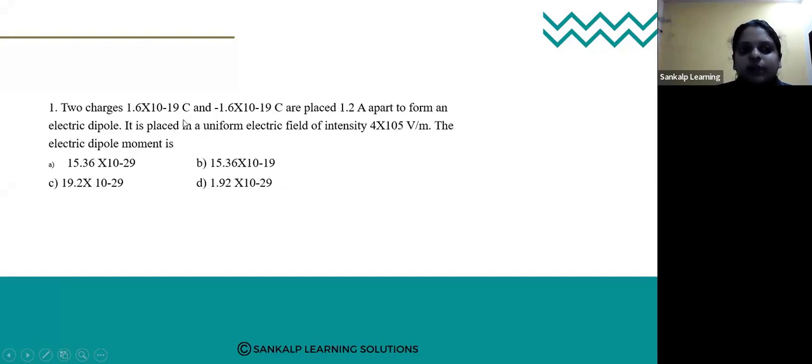The electric dipole moment is what we need to calculate. They have given two charges: one is 1.6×10^-19 and the other charge is -1.6×10^-19 coulomb, and the distance is 1.2 angstrom.